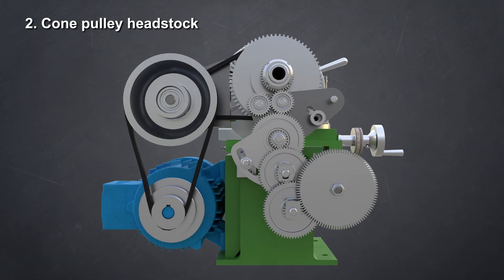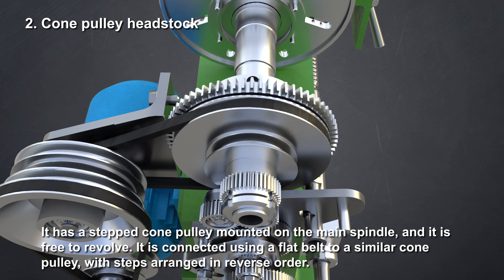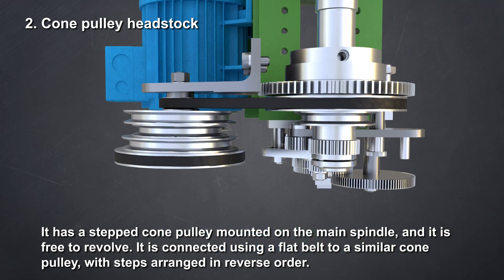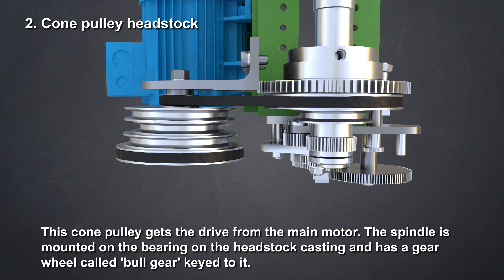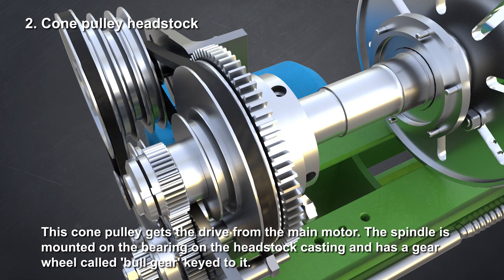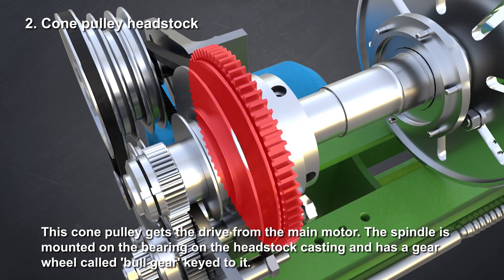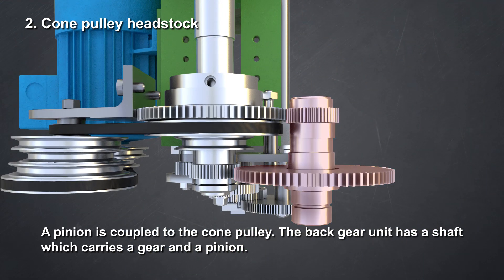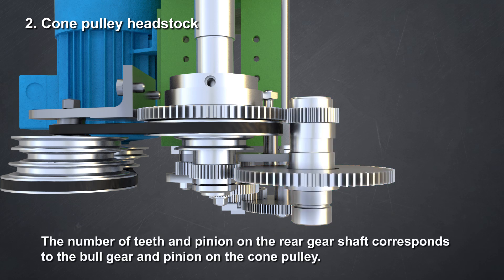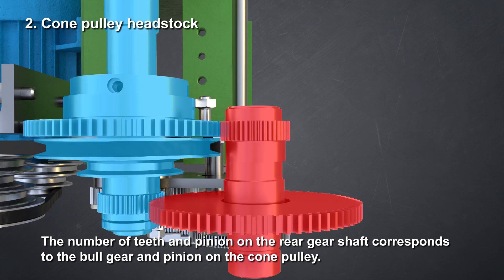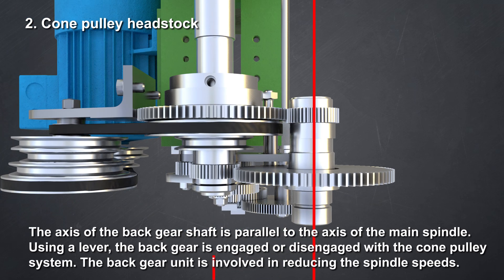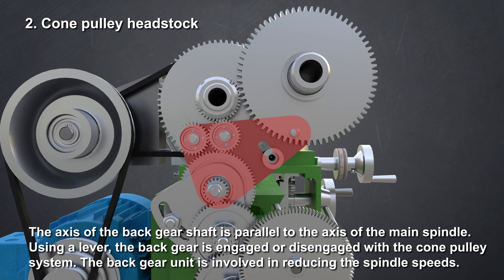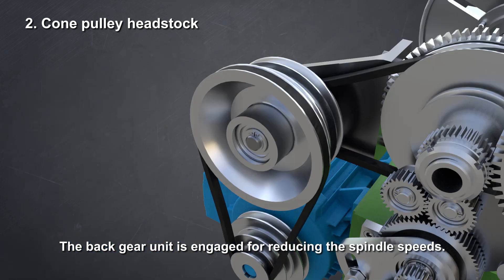Cone pulley headstock. It has a stepped cone pulley mounted on the main spindle and it is free to revolve. It is connected using a flat belt to a similar cone pulley with steps arranged in reverse order. This cone pulley gets the drive from the main motor. The spindle is mounted on the bearing on the headstock casting and has a gear wheel called bull gear keyed to it. A pinion is coupled to the cone pulley. The back gear unit has a shaft that carries a gear and a pinion. Using a lever, the back gear is engaged or disengaged with the cone pulley system. The back gear unit is involved in reducing the spindle speeds.